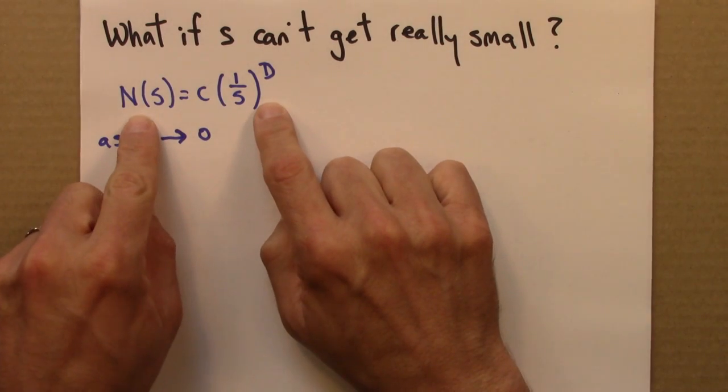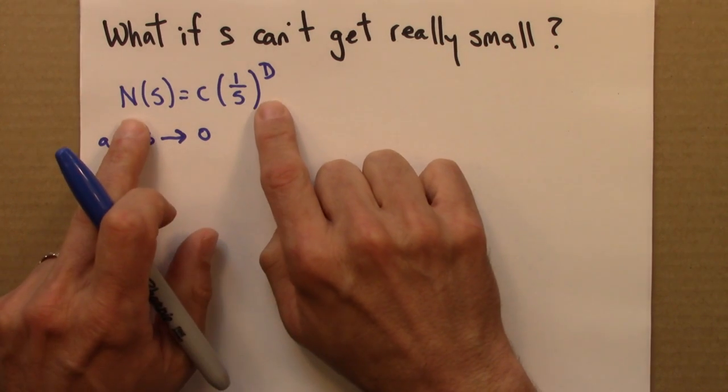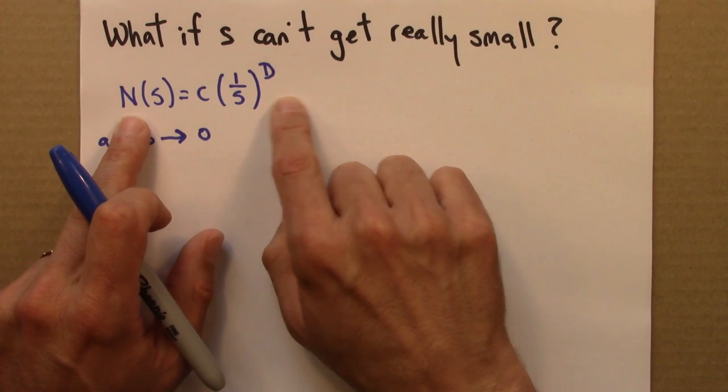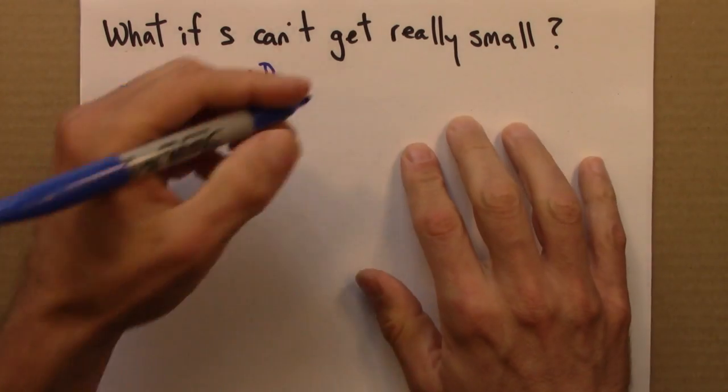So what do we do? Well, let's start with this equation, and I'm going to do like we did before. I'm going to take the logarithm of both sides, apply log properties, and this equation becomes this.